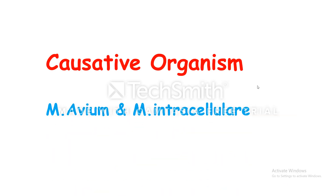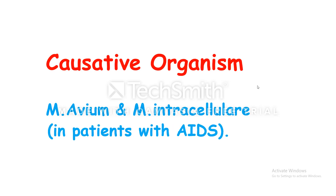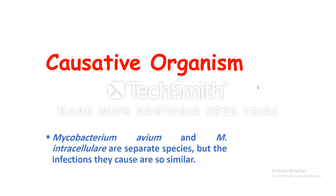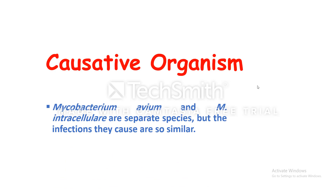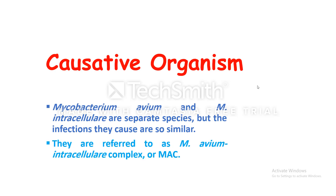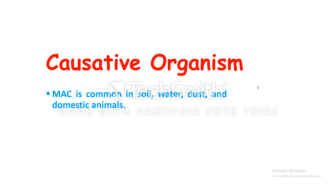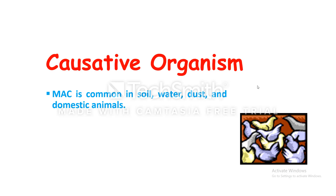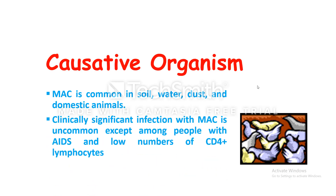Mycobacterium avium and Mycobacterium intracellulare occur in patients with AIDS. Because the infections they cause are so similar, they are referred to as Mycobacterium avium-intracellulare complex, or MAC. MAC is common in soil, water, dust, and domestic animals and birds. Clinically significant infection with MAC is uncommon except among people with AIDS and those with low CD4 lymphocyte counts.